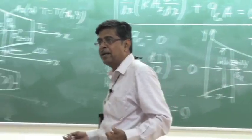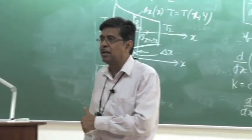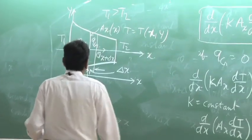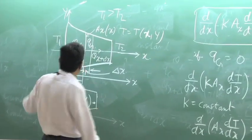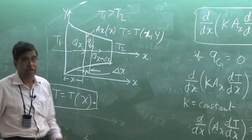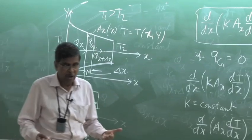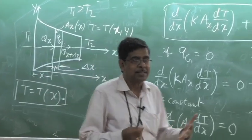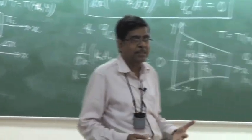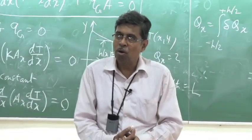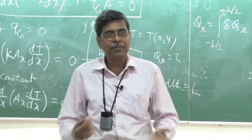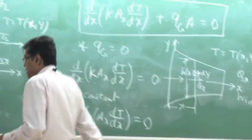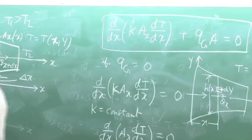Truly speaking, this is a two-dimensional heat transfer problem where T is a function of both x and y. Only if the area variation is not large and the boundary conditions permit can we reduce it to one dimension. After this, I will solve some interesting problems. Thank you very much.